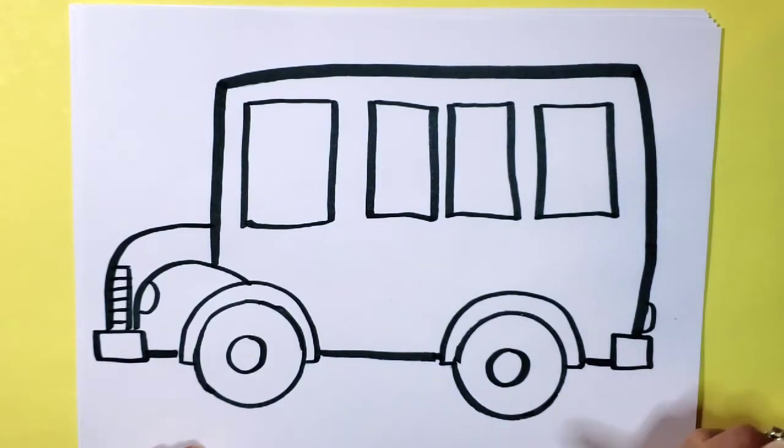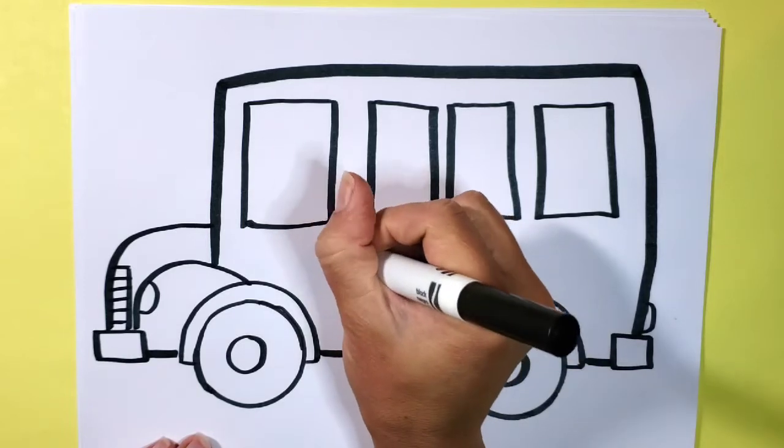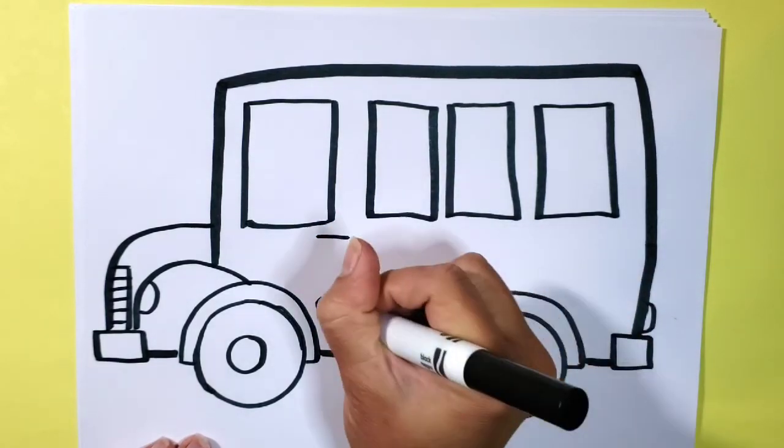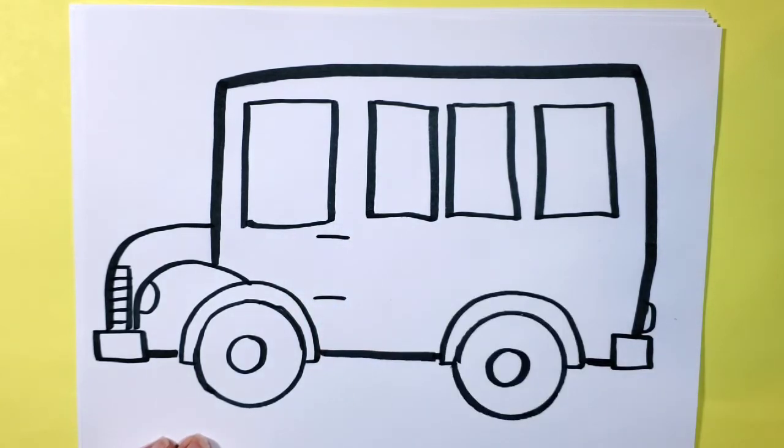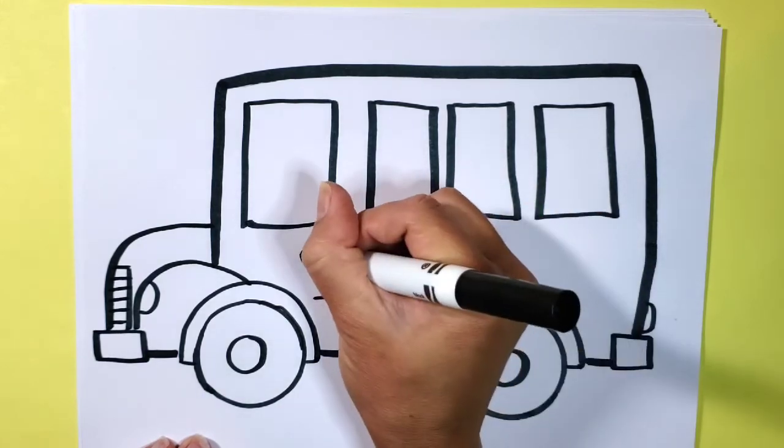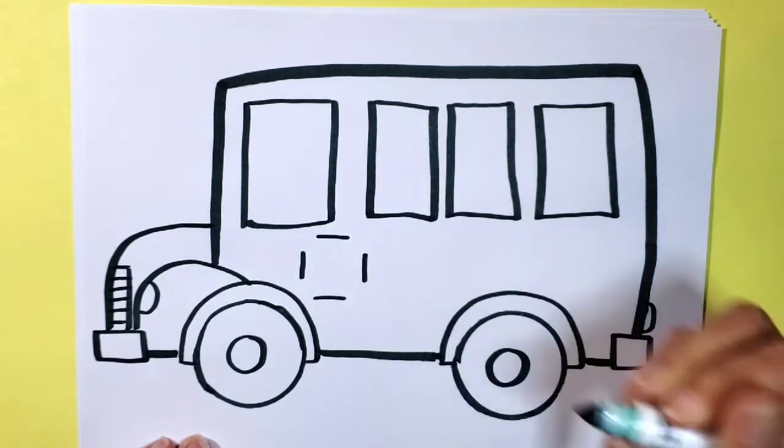School buses usually have a stop sign on the side so I'm going to go ahead and put that right here. To do that I'm going to make a line on the top and the bottom of where I want the stop sign to be and then I'm going to make a line on both sides like that.